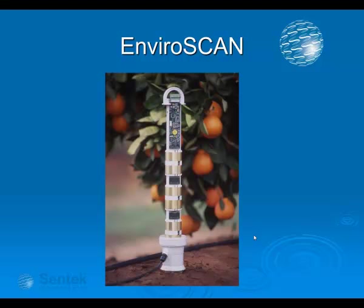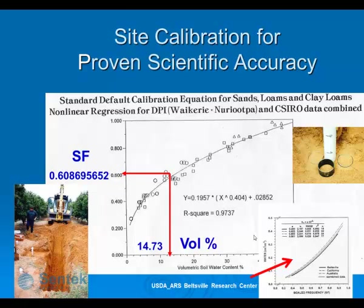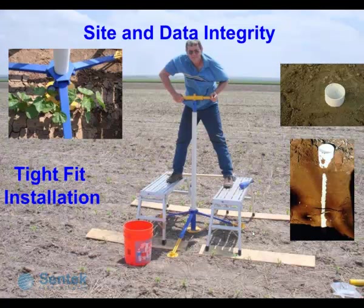The tool we are using is the Enviroscan, which is a multi-sensor capacitance profiling probe. The sensors typically sit every 10 centimeters and are inserted into an access tube. They come to life every 10 minutes for about a second, and the data are recorded on a small data logger. All the data are converted from the instrument via a calibration equation into volumetric soil water content. We have a standard default calibration equation that covers pretty much all commercial operations, and researchers can fine-tune the accuracy further by conducting their own calibration equation on site.